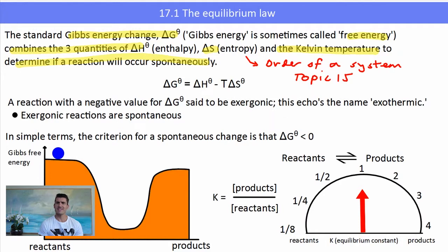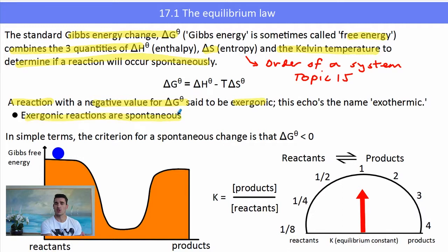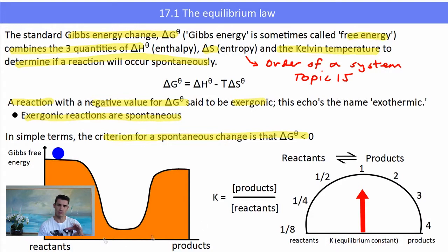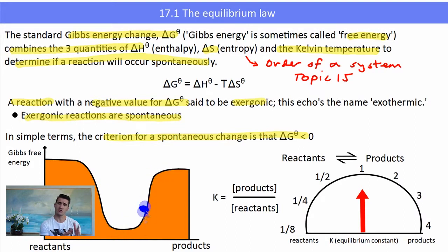A reaction with a negative delta G is said to be exergonic — this echoes the name exothermic — and exergonic reactions are spontaneous. So if we have a negative value, it's going to be a spontaneous reaction. The criteria for a spontaneous change is that delta G naught is less than zero. Looking at the image on the left, the roller coaster diagram shows that the difference in delta G between the reactants and products is slightly less.